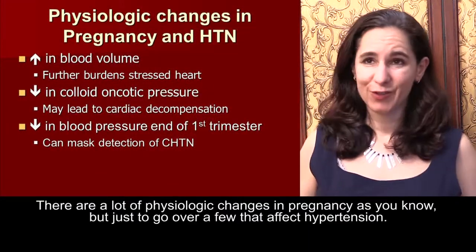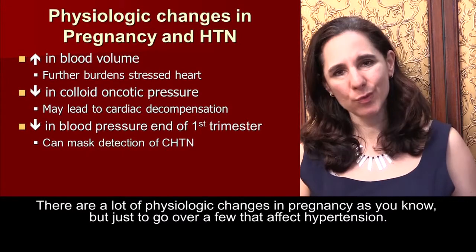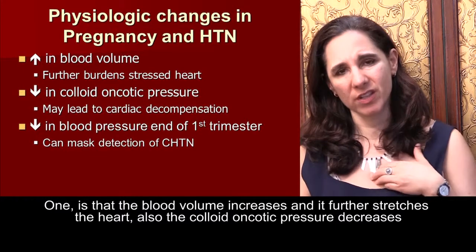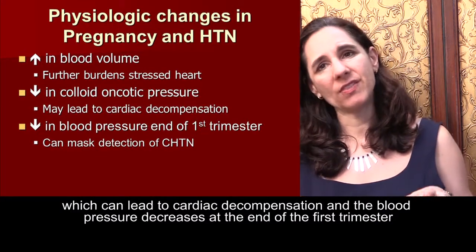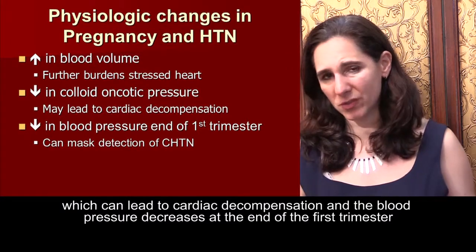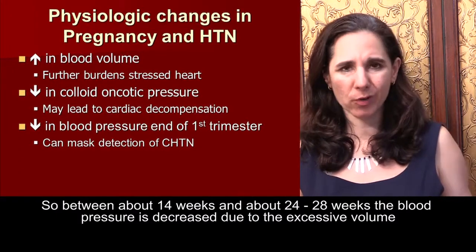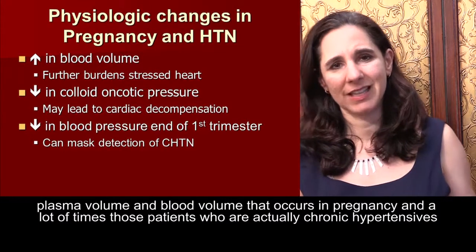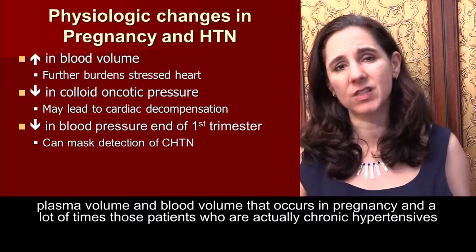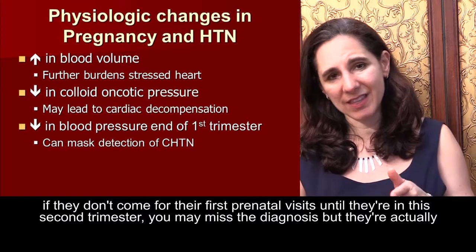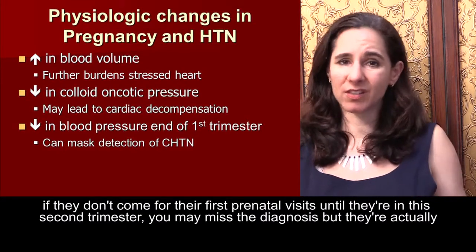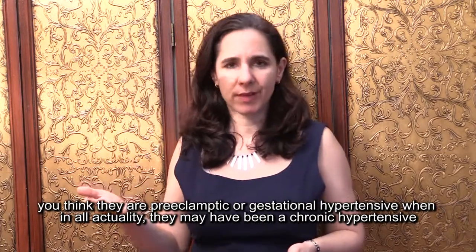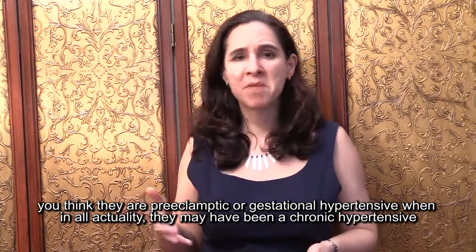There are important physiologic changes in pregnancy that affect blood pressure. Blood volume increases, which further stretches the heart; colloid oncotic pressure decreases, which can lead to cardiac decompensation; and blood pressure decreases at the end of the first trimester — between about 14 and 24-28 weeks — due to the excessive plasma and blood volume that occurs in pregnancy. Consequently, patients who are actually chronic hypertensives and don't come for their first prenatal visit until the second trimester may be missed, and when blood pressure rises in the third trimester, they may be misclassified as preeclamptic or gestational hypertensive rather than chronic hypertensive.